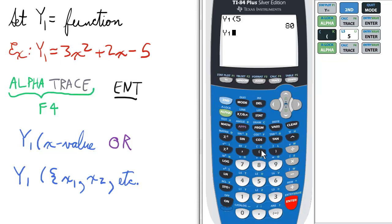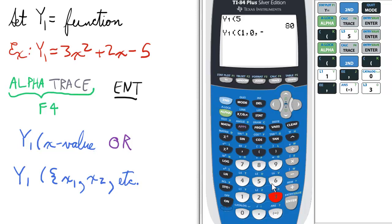In this case though, we have to enter open parentheses, followed by open braces. Then enter the values you want. Let's say we want to find 1, 0, negative 3. Notice for the different x values, I need to separate them with a comma. So press enter.